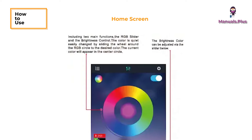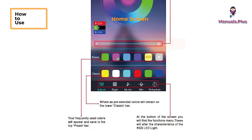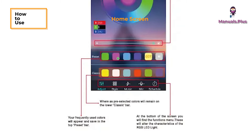The home screen includes two main functions: the RGB slider and the brightness control. The color is easily changed by sliding the wheel around the RGB circle to the desired color. The current color will appear in the center circle. The brightness can be adjusted via the slider below. Classic bar and preset bar will alter the characteristics of the RGB LED light.